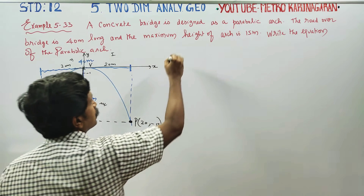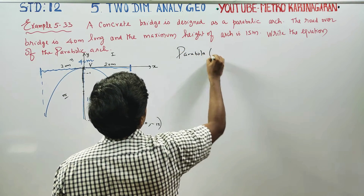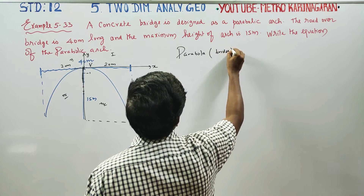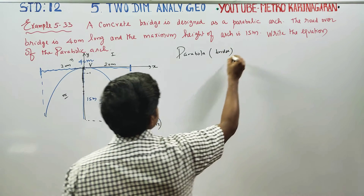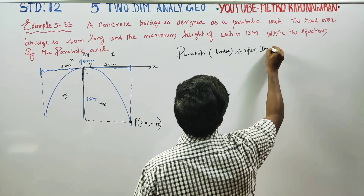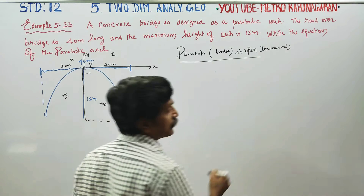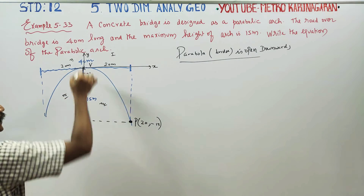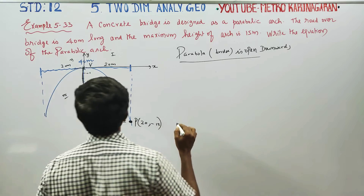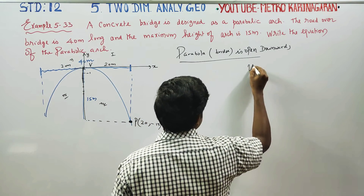I am going to write my parabola. This is the parabola — it is the bridge. The parabola is open downwards. If you look at the opposite axis, the y-axis is the same; the parabola is symmetric about the y-axis.